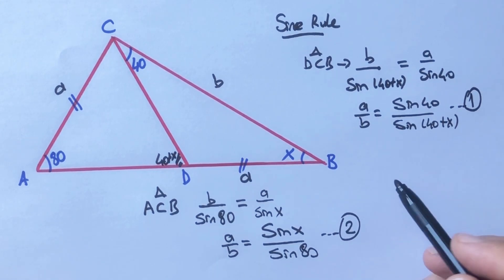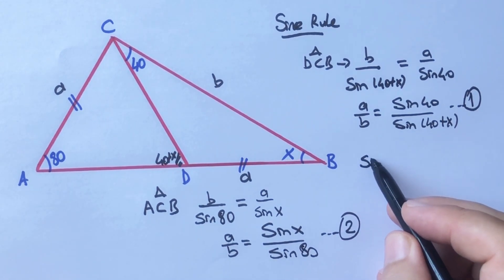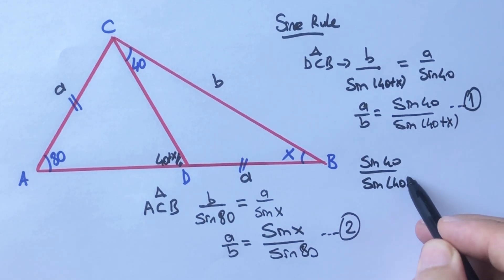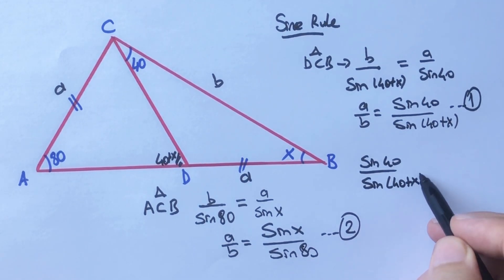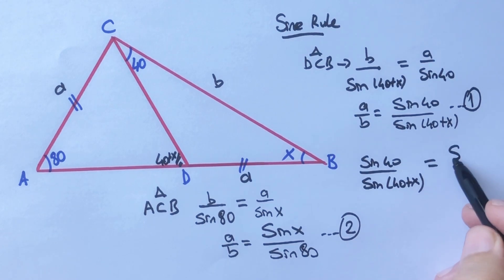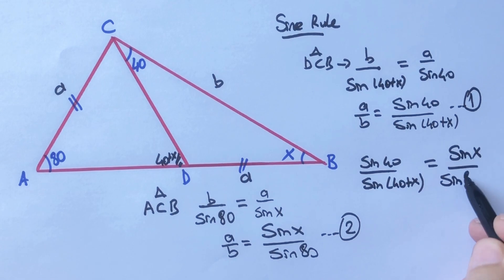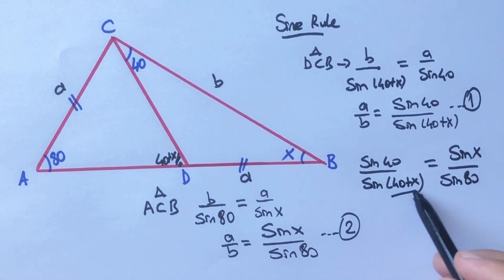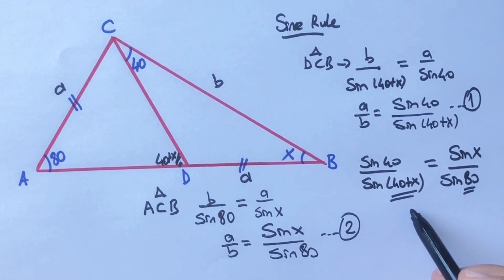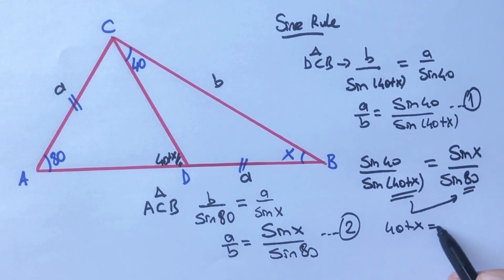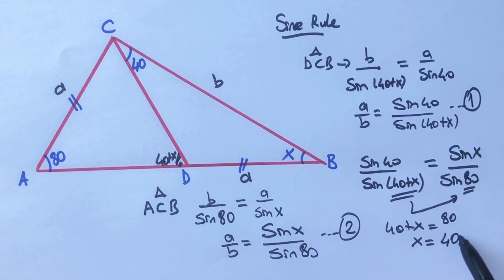Let's equalize these two equations: sine 40 over sine(40 plus x) equals sine x over sine 80. Therefore 40 plus x equals 80 degrees, so x equals 40 degrees. Thanks for watching.